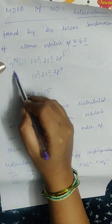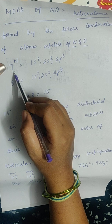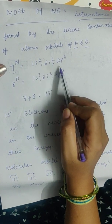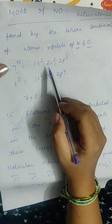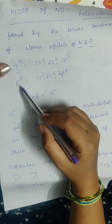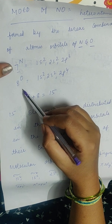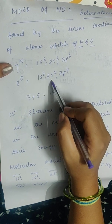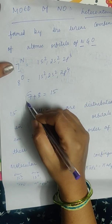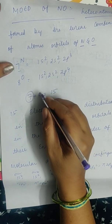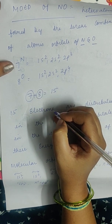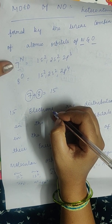its atomic number is 7, so it has 7 electrons in it. It is 1s2, 2s2, 2p3. The electronic configuration of oxygen, which has an atomic number of 8, is 1s2, 2s2, 2p4. So nitrogen is contributing 7 electrons and oxygen is contributing 8 electrons towards the formation of nitric oxide.